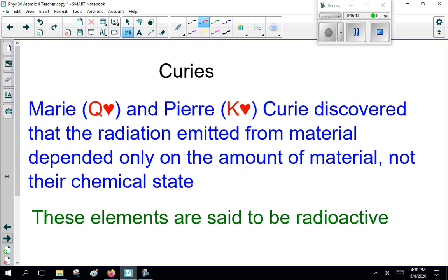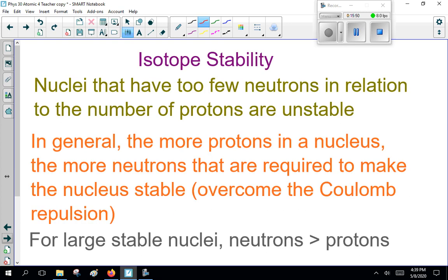Anyway, getting to that. Marie and Pierre Curie, the king and queen of hearts, discovered that radiation emitted from material depended only on the amount of material, not the chemical state. These elements are said to be radioactive. Now, there was Becquerel. I believe it was Becquerel. Yes, he had some radioactive isotope in a photograph. And that created an image on the photograph. That's where he realized there was something there. Now, it was Marie and Pierre Curie that realized it didn't matter what you do to the material. Heat it up, cool it down, whatever. Mix it with other chemicals. It was the amount of material, not the chemical state that affected it.